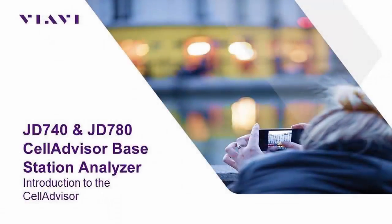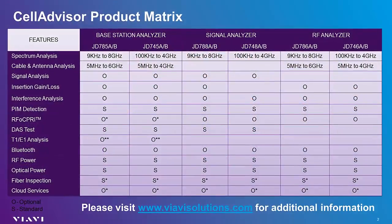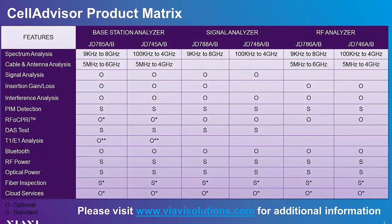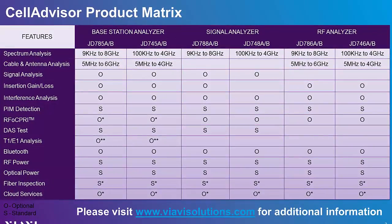Welcome to the first video module in a series of modules created to help you utilize the VIAVI Solutions Cell Advisor Series of Base Station Analyzers. This video is applicable to any of the JD740B or JD780B Cell Advisor Analyzers. This product matrix highlights some of the differences between all of the Cell Advisor models. These analyzers are operationally identical, so this video applies equally to any of these models.